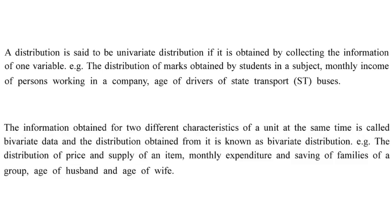When information is obtained for two different characteristics of a unit at the same time, it is called bivariate data, and the distribution obtained is known as a bivariate distribution. Examples include price and supply of an item, expenditure and saving of a family, and age of husband and age of wife.